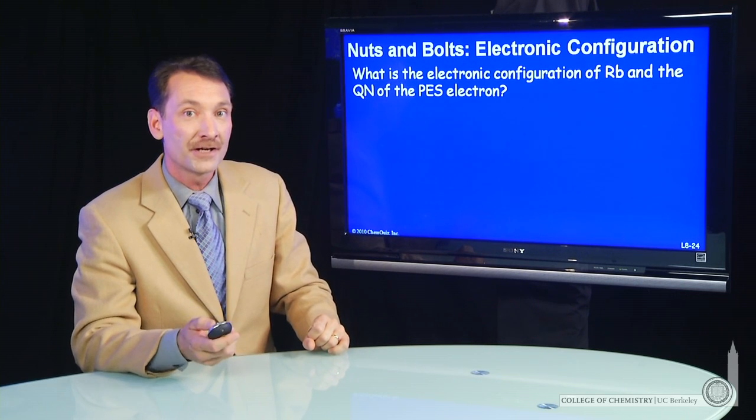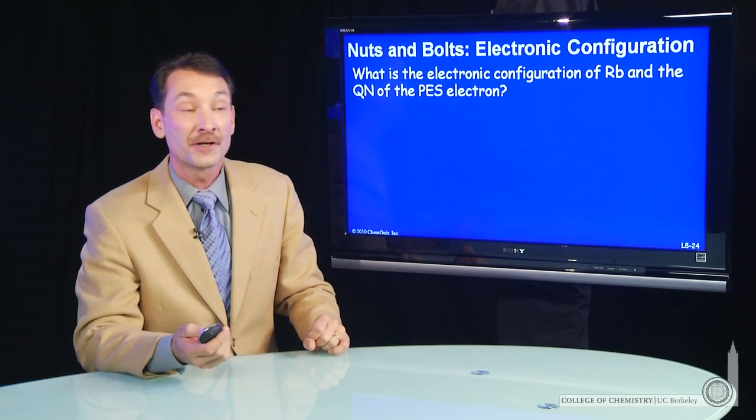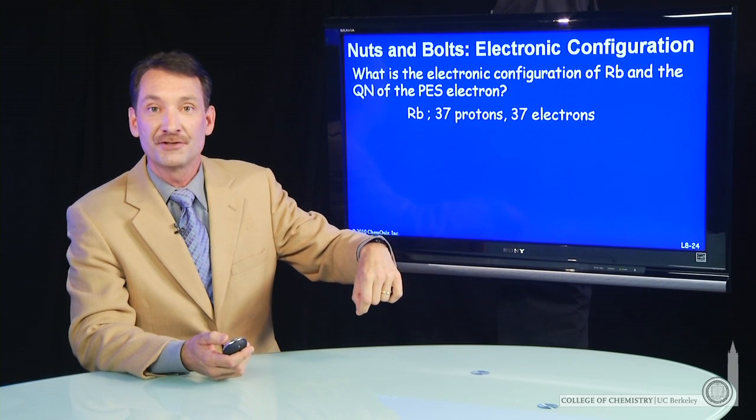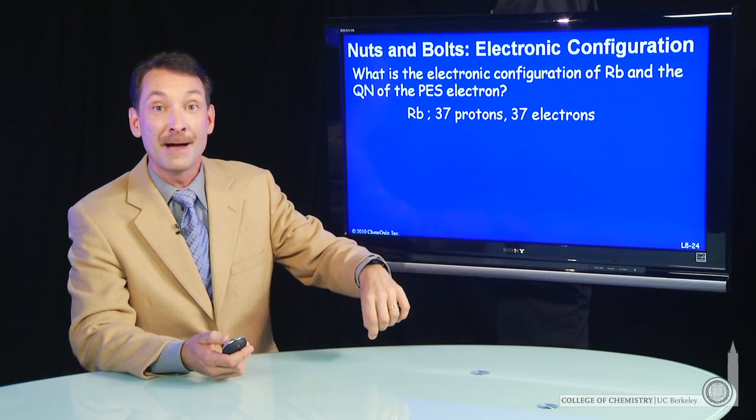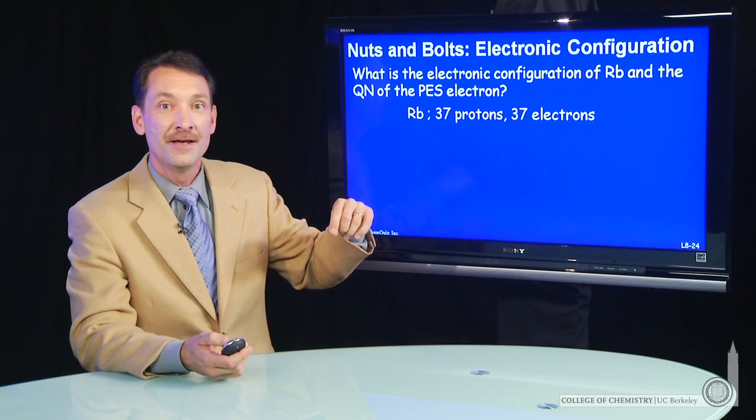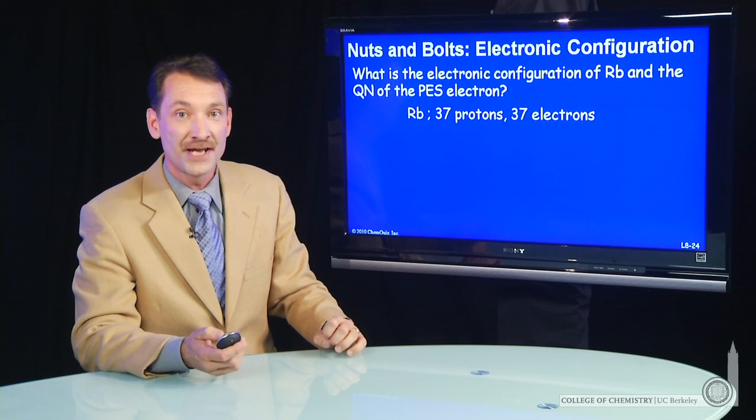When you're writing electronic configurations, you need to know the total number of electrons. In a neutral atom, the total number of electrons is equal to the positive charges, the number of protons, the atomic number of the atom. Rubidium, atomic number 37, has 37 protons in its nucleus. It has 37 electrons in its neutral state.